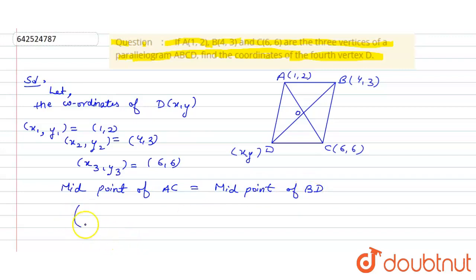Now, midpoint can be written as X1 plus X3 upon 2 and Y1 plus Y3 upon 2. It will be equal to X2 plus X upon 2 and Y2 plus Y upon 2.